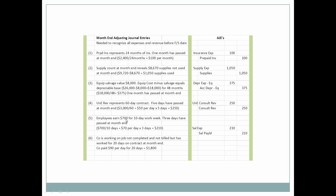Next, we have to look at what employees have been earning. The employees earn $700 for a 10-day work week, and three days have passed at month end. So $700 divided by 10 days means employees earn $70 per day; three days have been worked, meaning we owe them $210. Salary expense as a debit will increase by $210, and salary payable will also increase $210. When we pay them in the following month, we'll have to take salary payable into consideration.